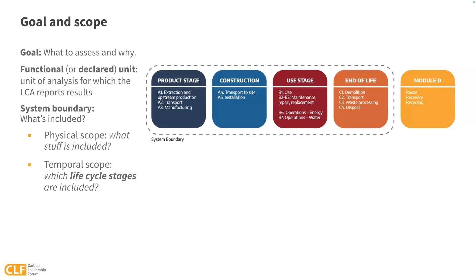These are typically classified into four main stages: the product stage — everything involved to make the product; the construction stage — getting products to the site and installing them; the use stage — which includes maintenance, replacement of materials, and ongoing operations; and the end-of-life stage — which includes demolition and disposal. Each of these stages is divided into more specific modules, such as A1, A2, etc., as shown here. Module D covers processes that are outside the system boundary, where the LCA standards include options for expanding scope to consider things like the potential benefit of recycling.